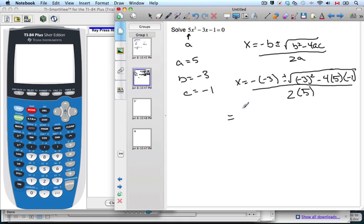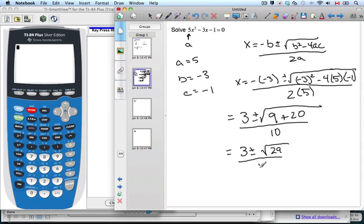So I get a positive 3 plus or minus, well minus 3 squared is 9, and I have 20, 2 negatives make a positive, so plus 20 over 10. And so simplifying, I get 3 plus or minus the square root of 29 all over 10. And this here is the exact answer.